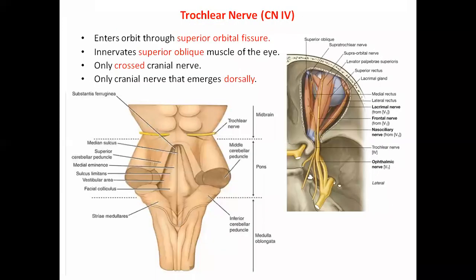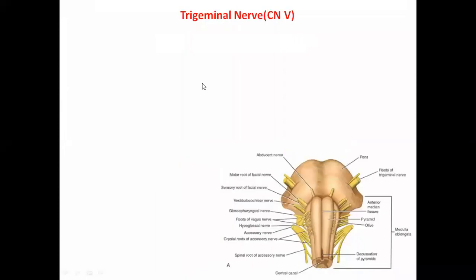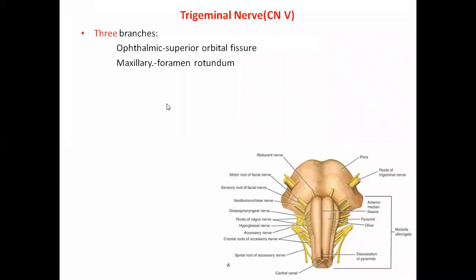The trigeminal nerve is the fifth cranial nerve. It has three branches: the ophthalmic branch, which passes through the superior orbital fissure, and the maxillary division, which passes through the foramen rotundum. These are some of the key branches and the openings through which they pass.